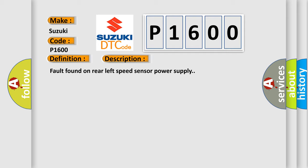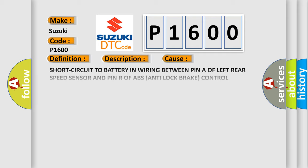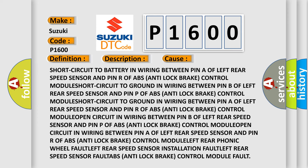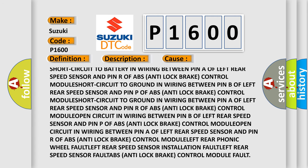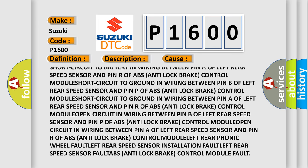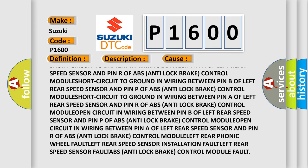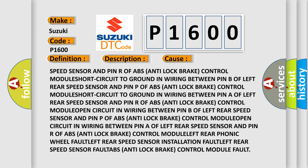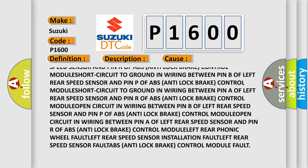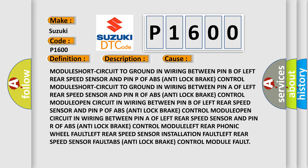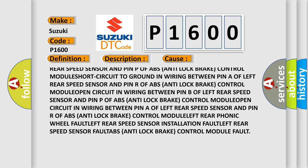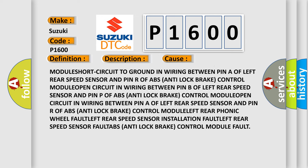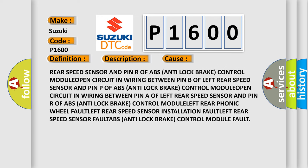This diagnostic error occurs most often in these cases: short circuit to battery in wiring between pin R of the left rear speed sensor and pin R of the ABS anti-lock brake control module; short circuit to ground in wiring between pin B of the left rear speed sensor and pin P of the ABS anti-lock brake control module; short circuit to ground in wiring between pin R of the left rear speed sensor and pin R of the ABS anti-lock brake control module.